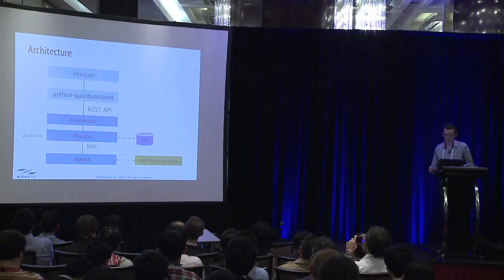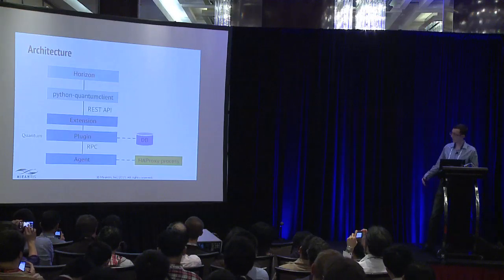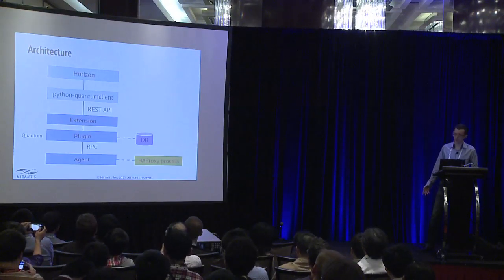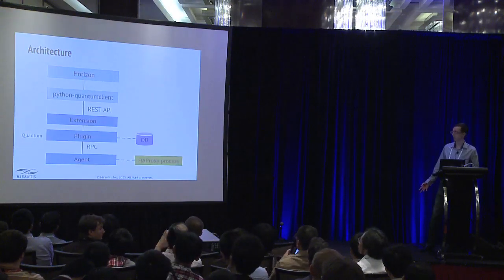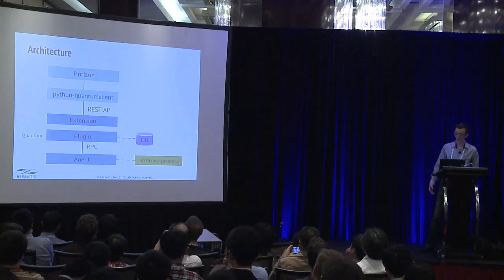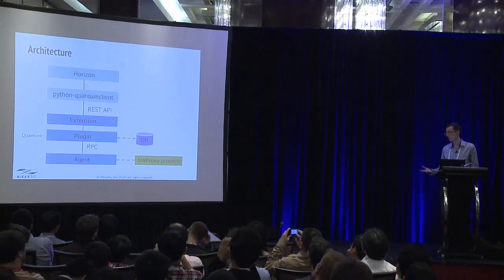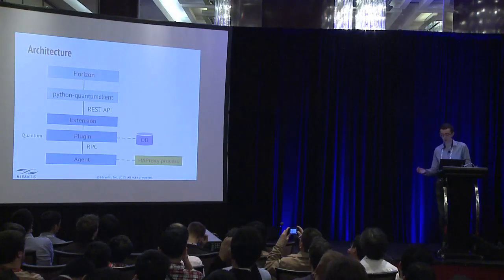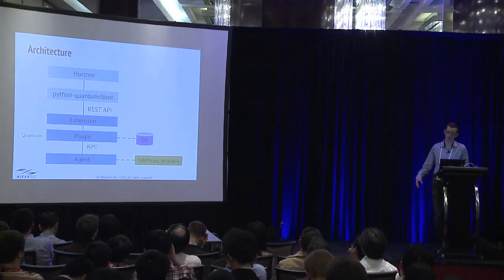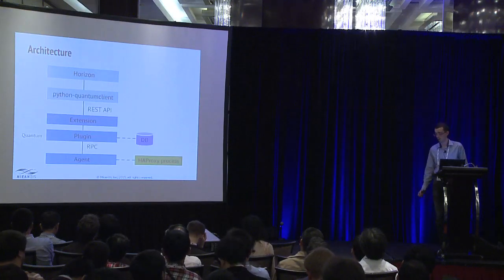That's how it looks from an architecture perspective. Users work with Horizon or with CLI, the REST call gets into the LBS extension — the load balancer API extension. It is processed by the load balancer plugin. The configuration is stored in the database, then the plugin communicates with the agent that resides in the network controller via RPC, and the agent manages HAProxy processes.